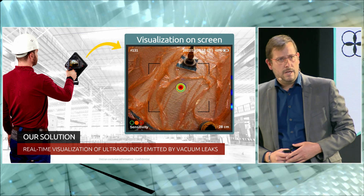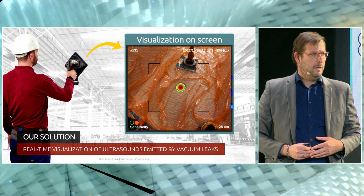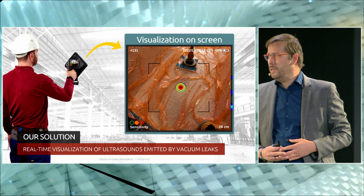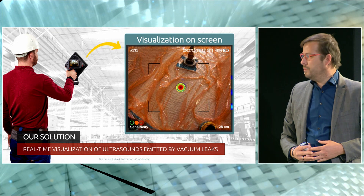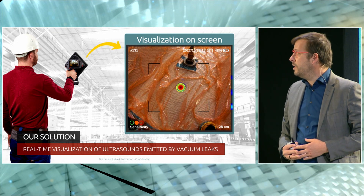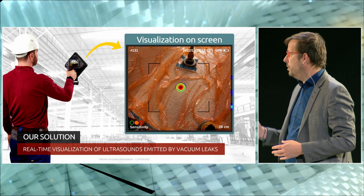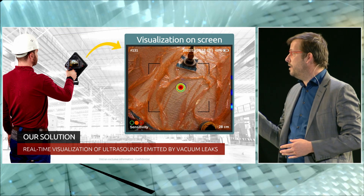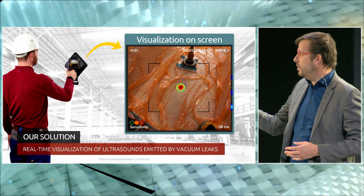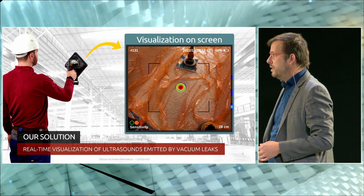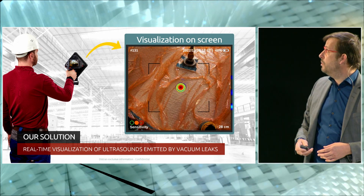What will you obtain as a result with our camera? As you can see in the picture, it's very easy and simple. You will have a real-time visualization of ultrasounds emitted by vacuum leaks. Your operator is going to manipulate the camera and obtain instant visualization and localization of the leaks — as shown by the red target in the middle of the picture.